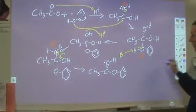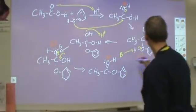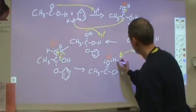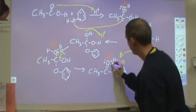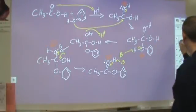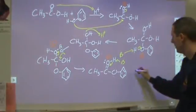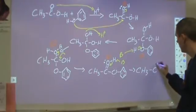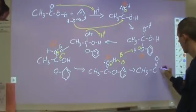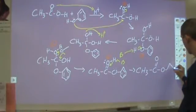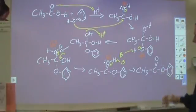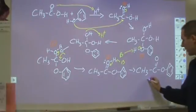Now we have a positive charge here. We need our base again, and our base is going to come along and form a bond with that. Those electrons are going to stay with the oxygen, and that will be our final product: CH3, C double bond O, O-benzene. Here is our ester.